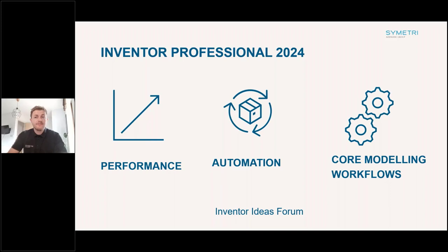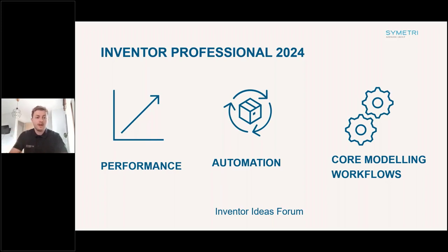A lot of the tools and features in this release are focused around the Inventor Ideas Forum. If you search in Google for the Inventor Ideas Forum, you can look at other people's thoughts on what might improve the software. You can vote for features, which flags up on the Autodesk system if it gets a required number of votes for the developers to look at. If you have any ideas, get them posted on there — come to us as well so we can help upvote them.